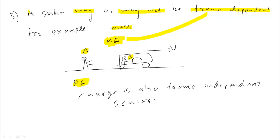Let's talk about potential energy. Potential energy depends on height. PE is mgh, so if you change the height or zero level, potential energy will change. Charge is a scalar that is frame independent - whether you see from moving frame or stationary frame, charge will appear the same.